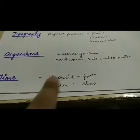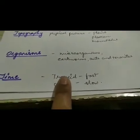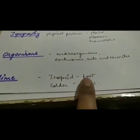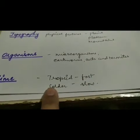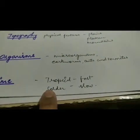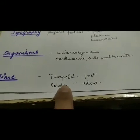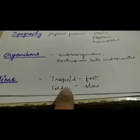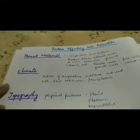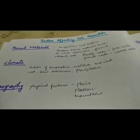Regarding time: in tropical regions with wet and warm climate, the formation of soil is fast. In colder regions, the rate of chemical reaction for soil formation is slow. Hence, in colder climates, soil formation is at a slower rate. These are the factors affecting soil formation.